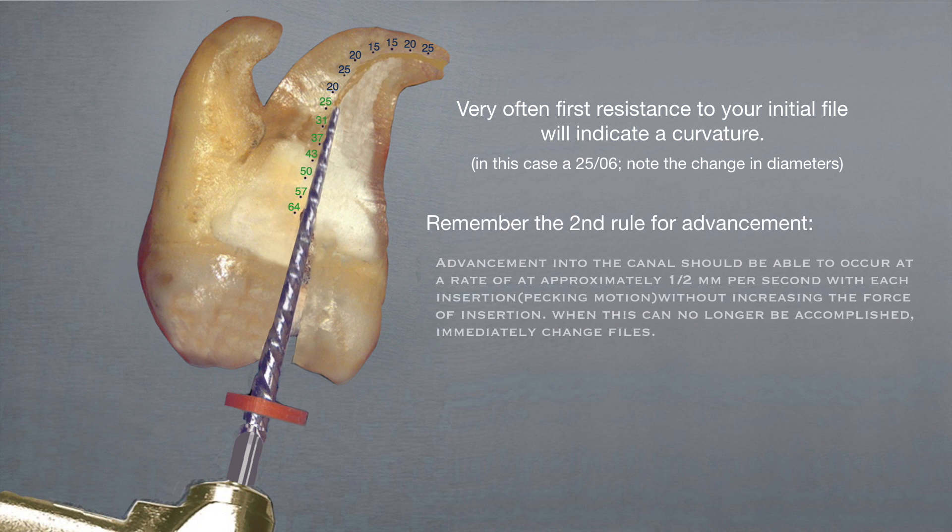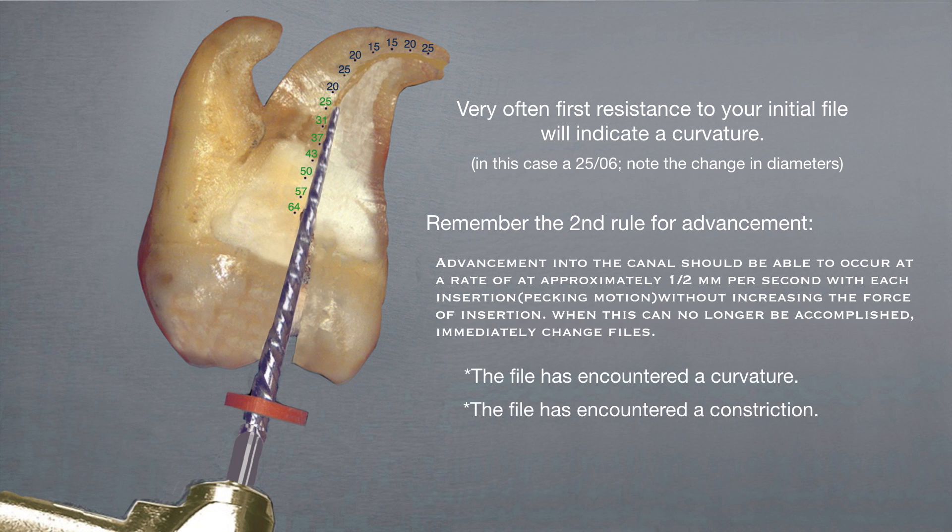Remember the second rule for advancement. Advancement into the canal should be able to occur at a rate of approximately one-half millimeter per second with each insertion and without increasing the force of insertion. When this can no longer be accomplished, immediately change the files. Resistance will have indicated that the file has encountered a curvature or a constriction or possibly that too much of it has become engaged.